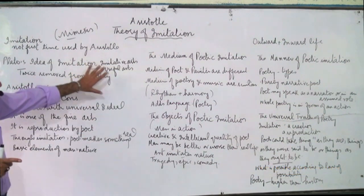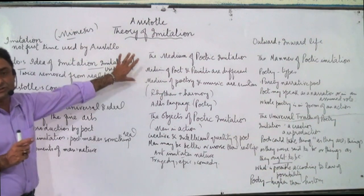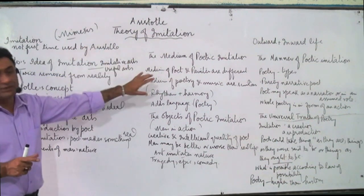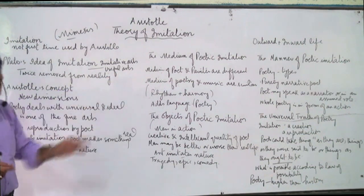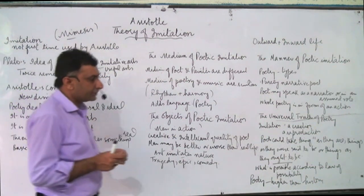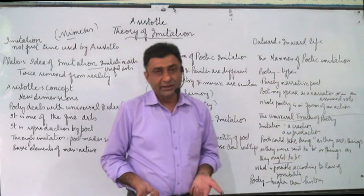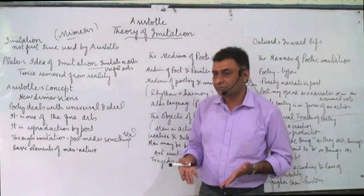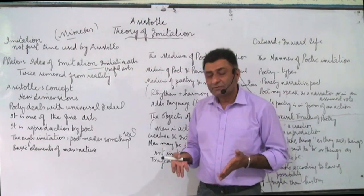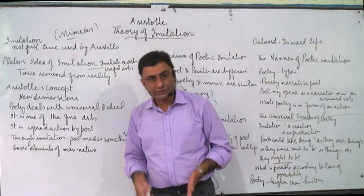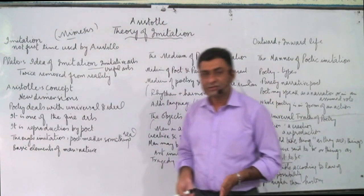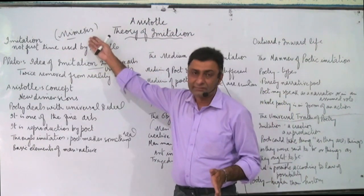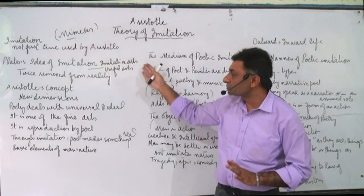Plato was of the view that poetry is a form of imitation and an imitative art, not a useful art. Because he was going to give a concept of an ideal republic, he said that in an ideal republic, all those arts must be part of it which are useful. But poetry, being just an imitative art related to mimicry, is of no significance.